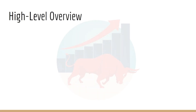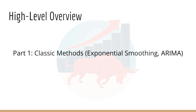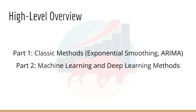Let's start with a very high-level overview of the course. This course can be broken up into three parts: Part one covers classic methods like exponential smoothing and ARIMA. Part two covers modern machine learning and deep learning. Part three covers VIP content, which will only be available in the VIP version of the course. Note that each part can be done in any order, so don't hesitate to skip to the lectures you care about most.